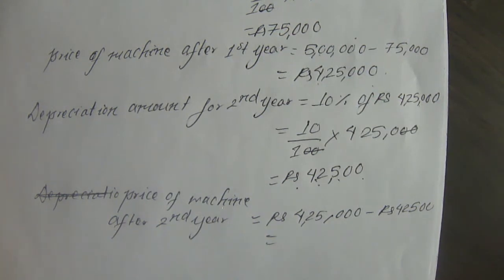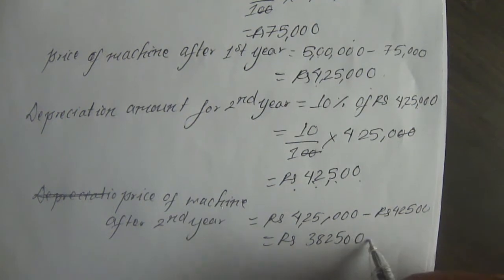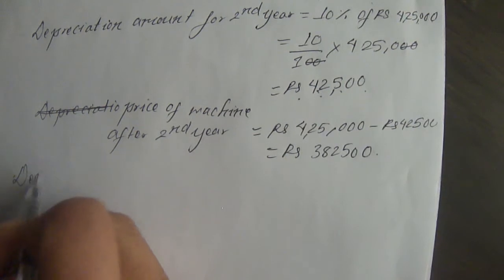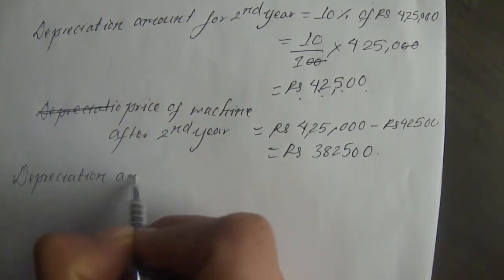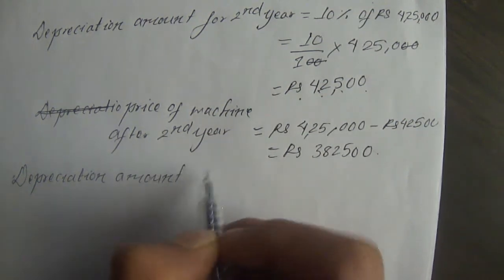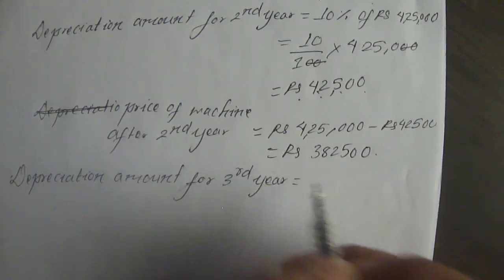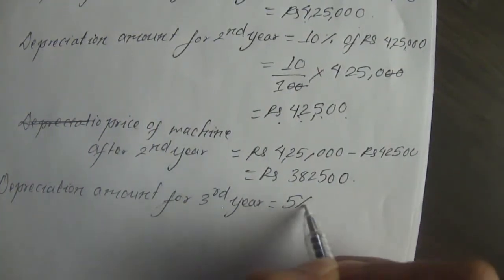Rs. 4,25,000 minus Rs. 42,500 gives us the price of the machine after the second year. Now the depreciation amount for the third year is 5% of Rs. 3,82,500.